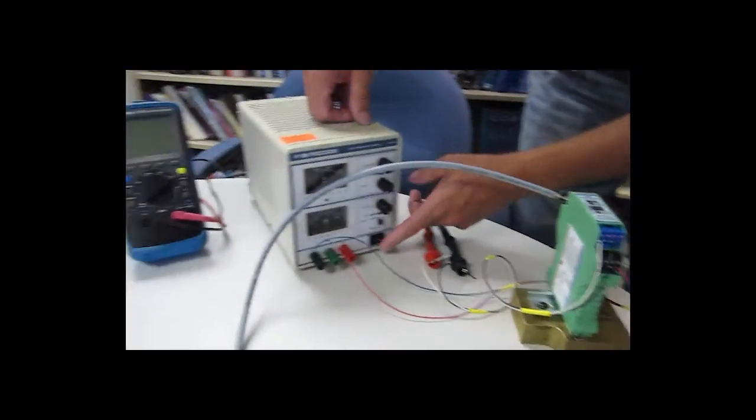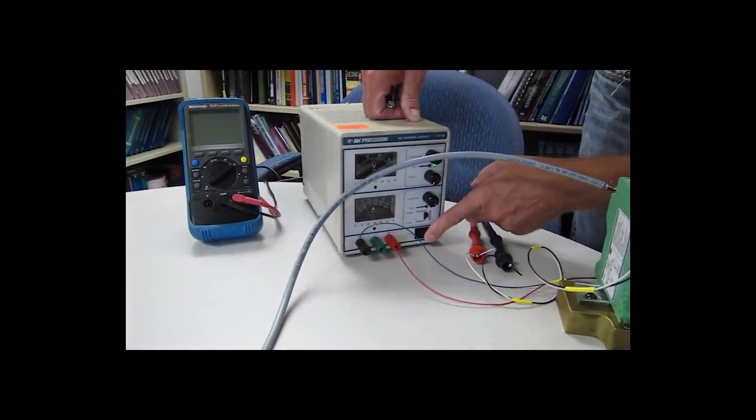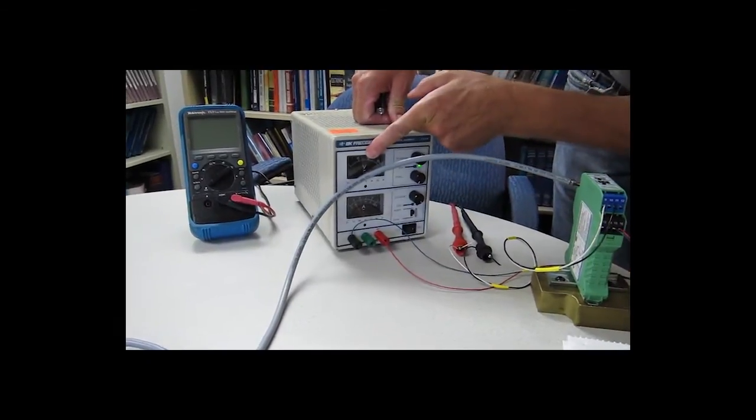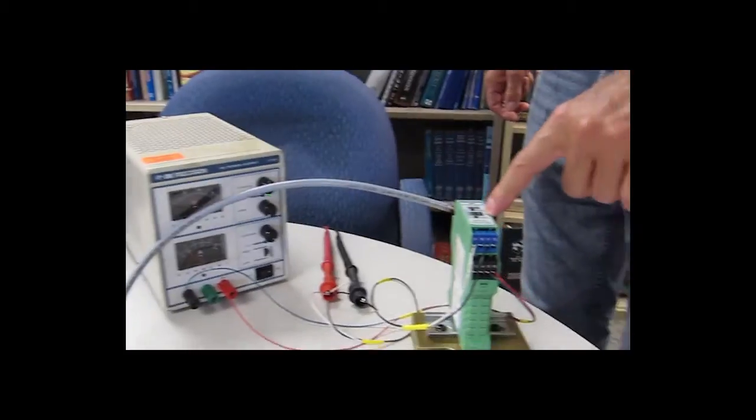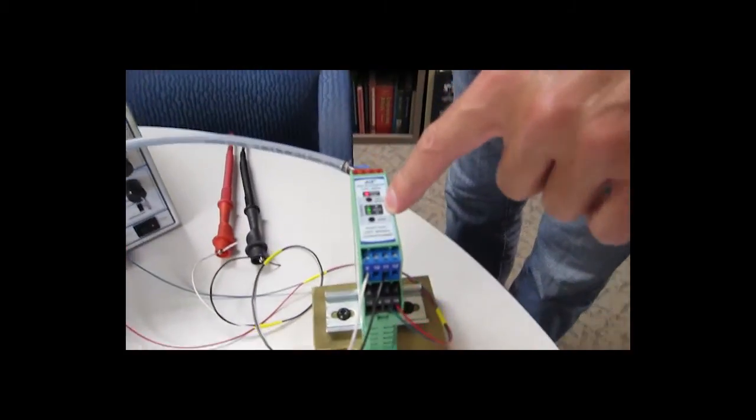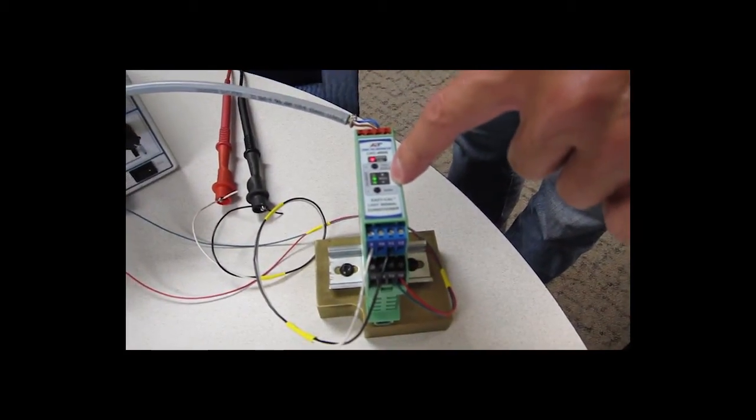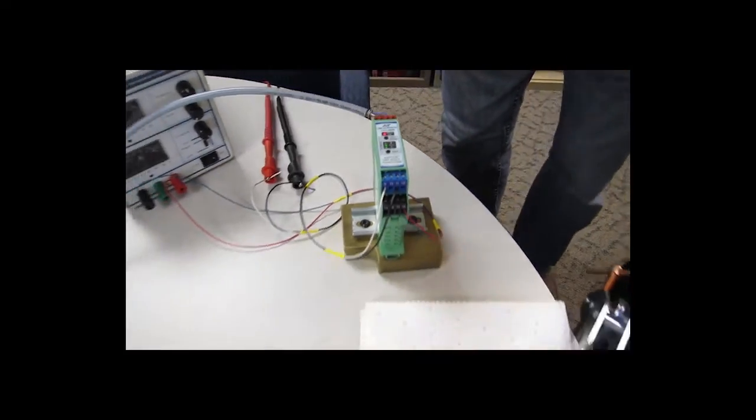So we'll apply 12 volts. We've got 12 volts. The signal conditioner is active. We can see the light. And now we'll perform the automatic calibration.